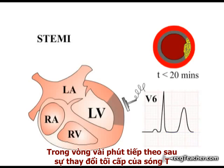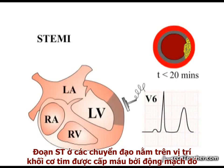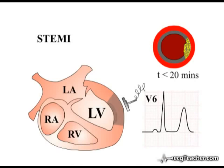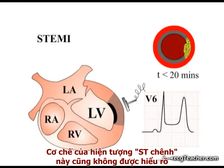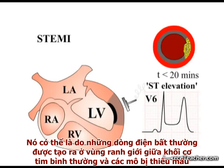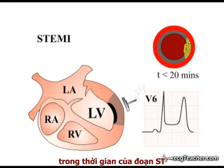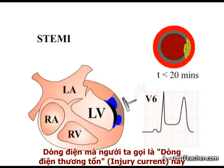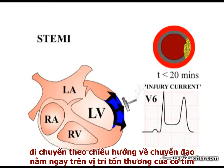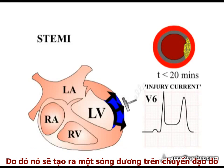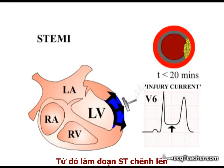In the minutes following hyper-acute T-wave changes, the ST segments in leads overlying the myocardial region deprived of arterial blood supply begin to rise above the isoelectric line. The mechanism underlying this ST elevation is poorly understood. It may be due to abnormal currents generated between normal and ischemic tissue during the time period of the ST segment. This so-called injury current moving towards the leads overlying the damaged region of myocardium would be expected to produce a positive deflection in their readouts, raising the ST segments.